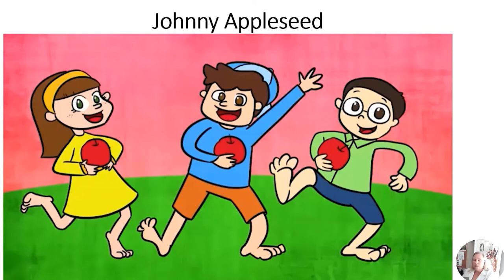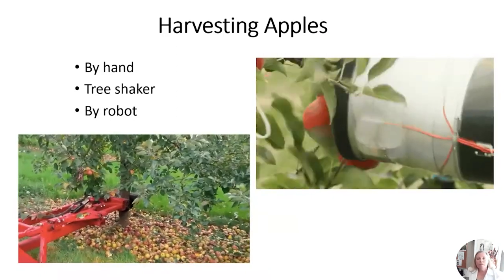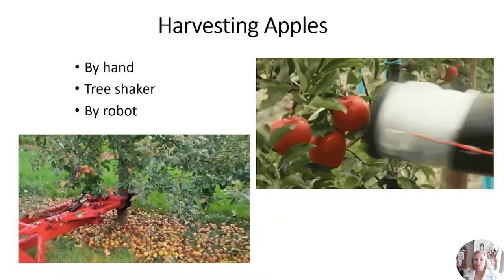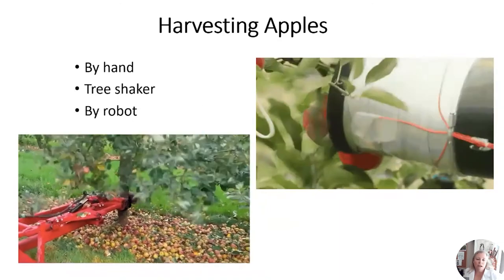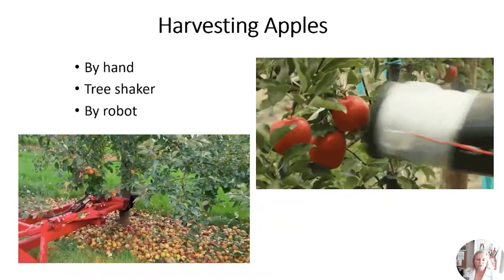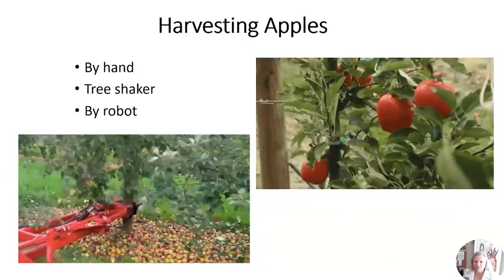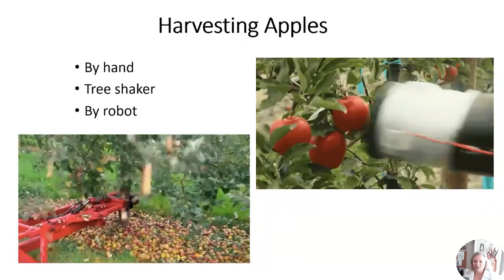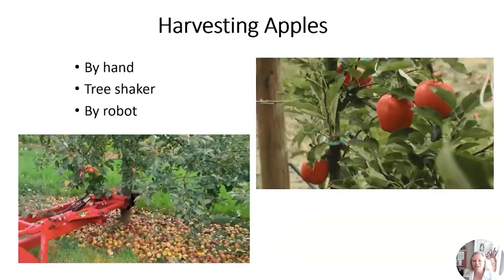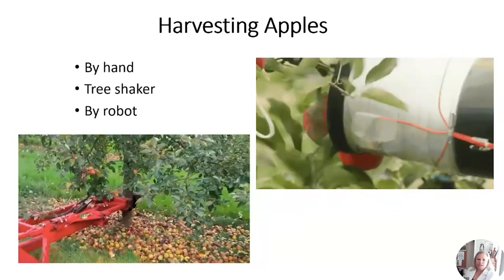In modern day harvesting of all the different types of apples, there are many ways. You saw someone picking by hand; here's a big machine that shakes the tree. Look at this one — it's like a giant vacuum robot that actually sucks the apples off. If they're ripe, they come off; if not, they hang on to the branch. It takes more than just a botanist to make an apple orchard — it takes physicists and many different types of workers.